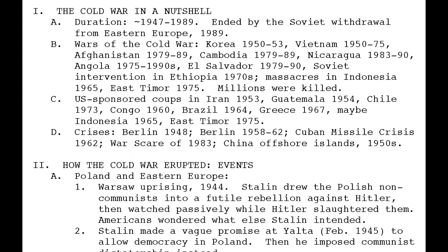So what exactly is the Cold War? These are notes from a lecture at the Massachusetts Institute of Technology, or MIT. The Cold War lasts between 1947 to 1989, and basically the Soviet Union and the United States are competing with one another. The world has a feeling that there is going to be a major outbreak of war between the United States and the Soviet Union.